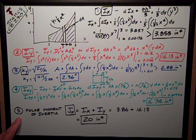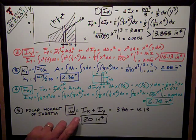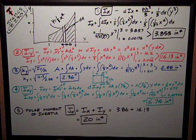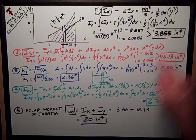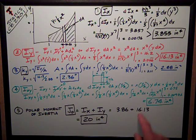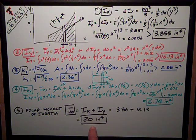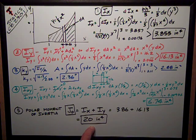Last but not least, I have the very simple polar moment of inertia, Jo, which equals Ix + Iy. I just add those two values together, 3.855 or 3.86 plus 16.13, and that gets to be 20 in⁴.